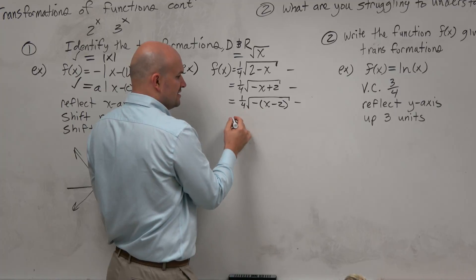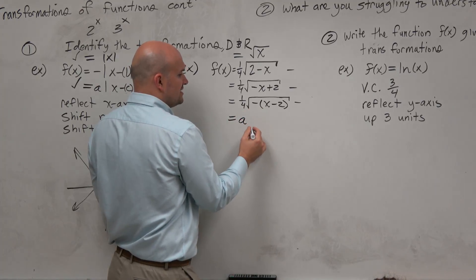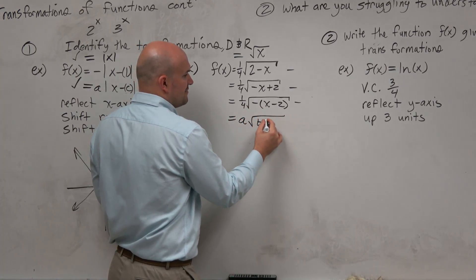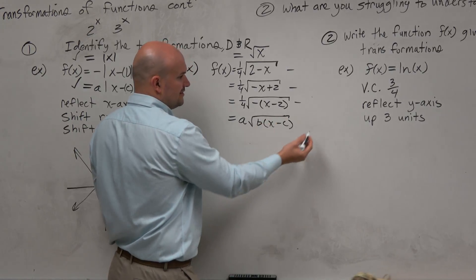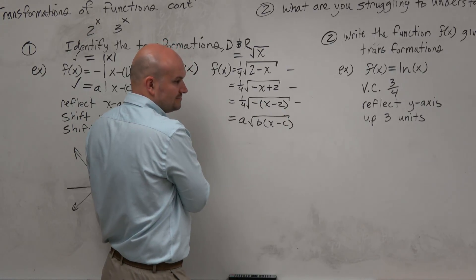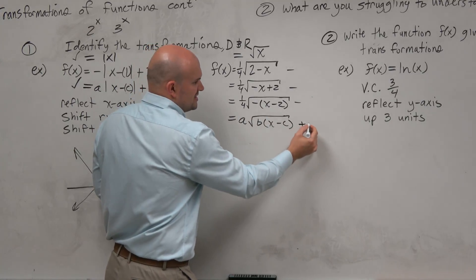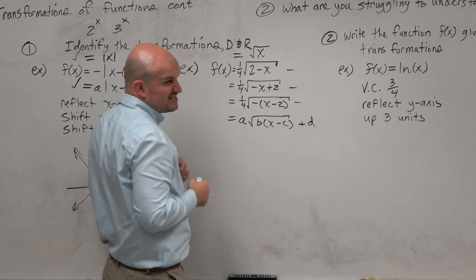Right? There's no d here, so I'm not going to write it in there. Actually, let's just write a d in there. There is no d, so it'll be 0.